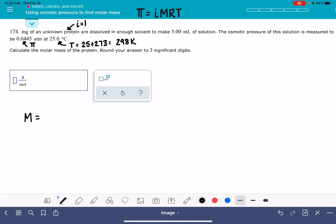The molarity is going to be π divided by iRT. So what I've done there is just taken the osmotic pressure equation and I've rearranged it to isolate the M variable. The osmotic pressure is 0.0445 atm. The value of i is 1. R, the ideal gas constant, is 0.08206 liters atm over moles Kelvin. And the temperature is 298 Kelvin.